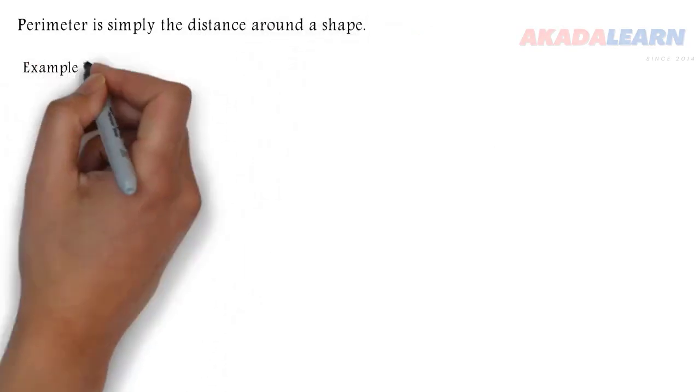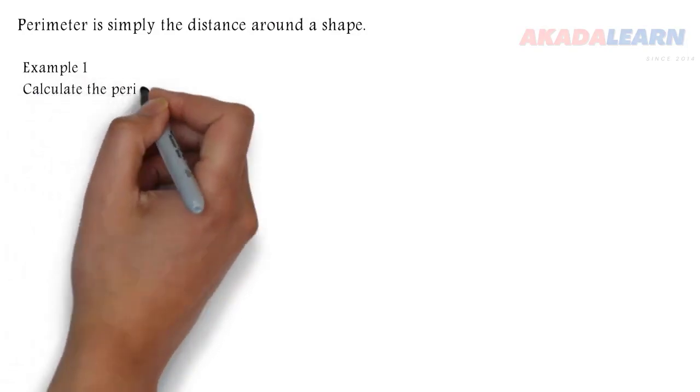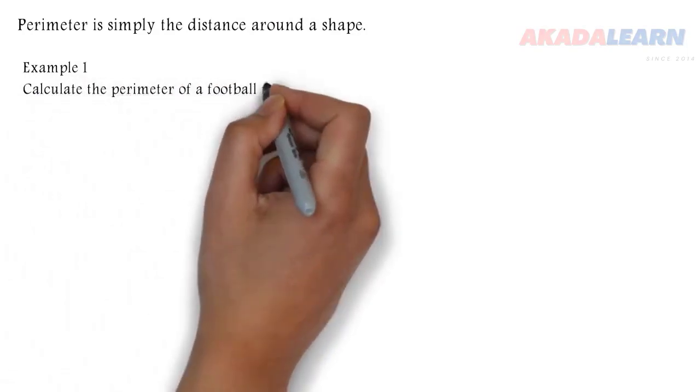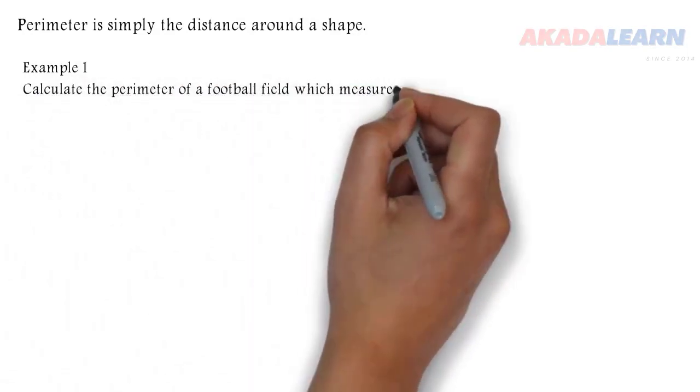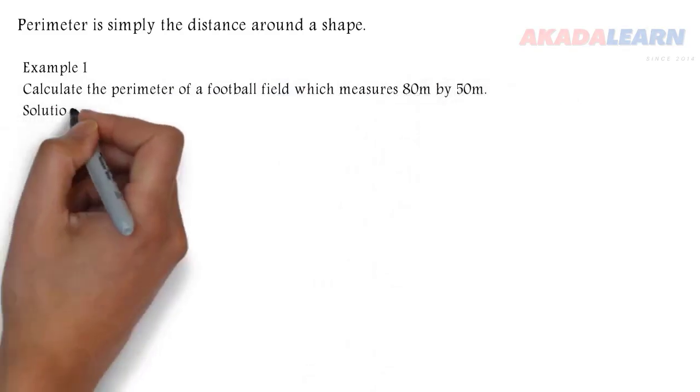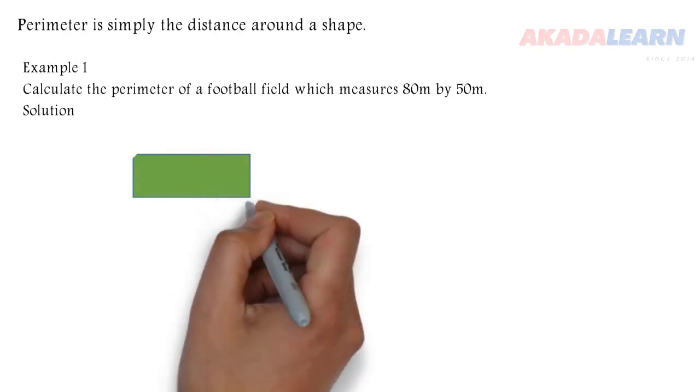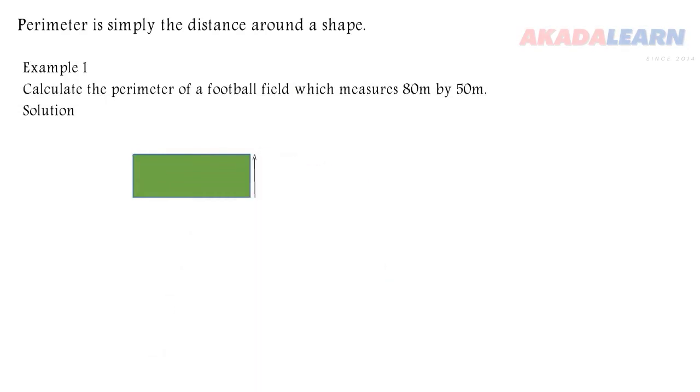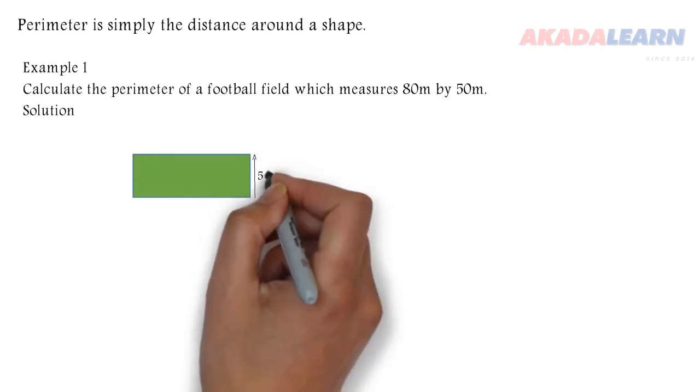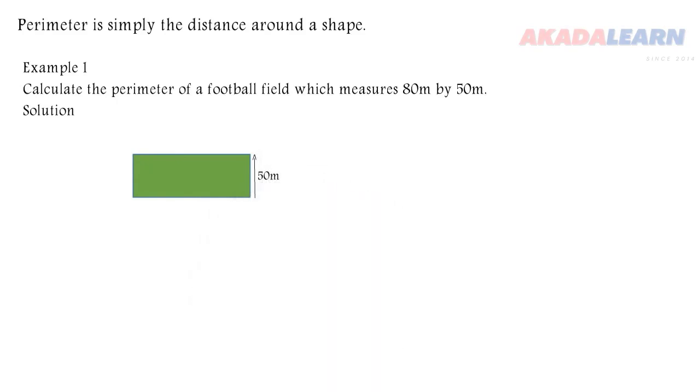Let's see the first example. Calculate the perimeter of a football field which measures 80 meters by 50 meters. First, let's draw our football field, which is the shape of a rectangle. We'll have 50 there, which is the breadth, and 80, which is the length.